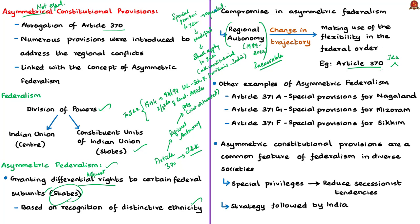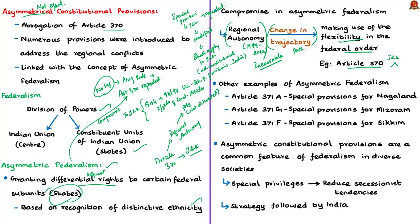The author states that the BJP government demonstrated the flexibility in the federal order by reshaping the size, powers and importance of Jammu and Kashmir — the only state with a Muslim majority population. The central government concentrated power, changing the trajectory of regional autonomy. The government successfully repealed the special provisions under Article 370 even when the Jammu and Kashmir legislative assembly was not functioning (President's Rule was in place). This shows that asymmetric federalism previously enjoyed by Jammu and Kashmir has been compromised, and these special constitutional provisions are not permanent but temporary in nature.